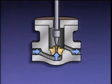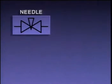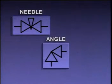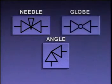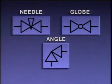A small movement of the stem causes a small gradual change in the flow rate through the valve. This gives the needle valve an extremely fine throttling ability. On a piping system diagram, a needle valve generally looks like this, an angle valve generally looks like this, and a globe valve generally looks like this.